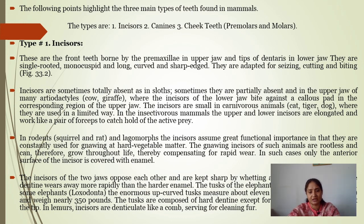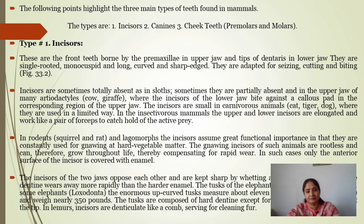Incisors may be completely absent or permanently or partially absent in some animals. Like the artiodactyls — cows and giraffes — incisors are absent in the upper jaw, where incisors of the lower jaw bite against a callous pad in the corresponding region of the upper jaw.